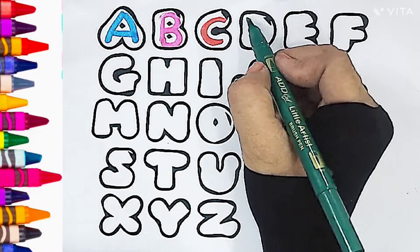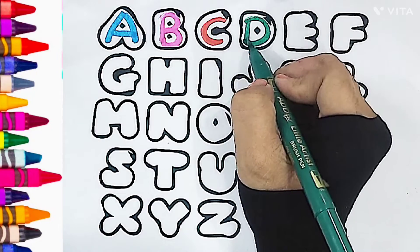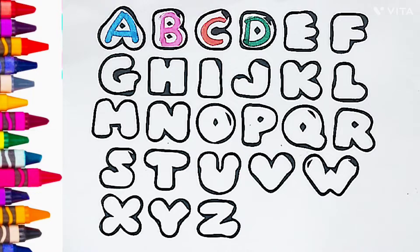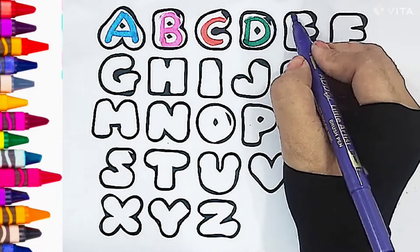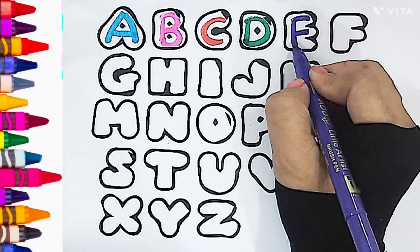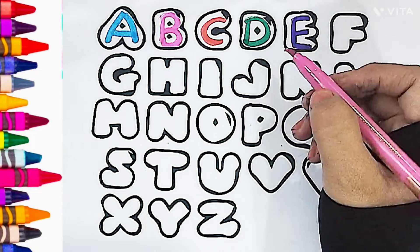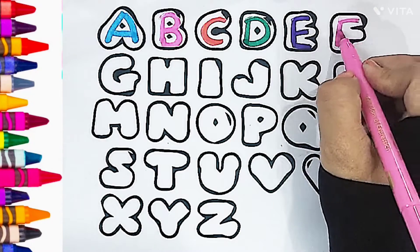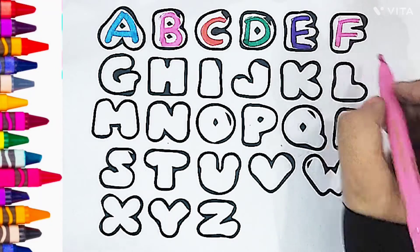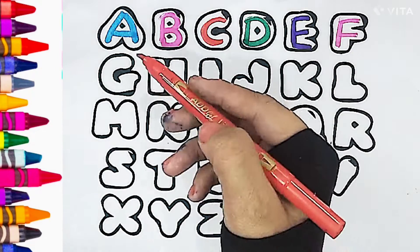Dark green color. D, D for Dog. Purple color. E, E for Elephant. Pink color. F, F for Fish.